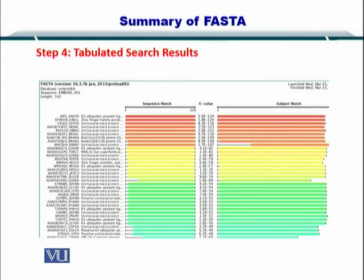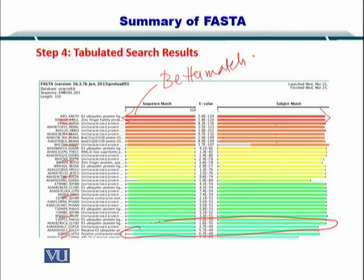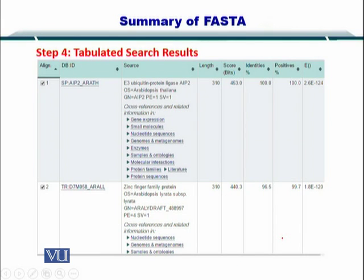Next, you perform the search. The output sample is shown here, and you can see many proteins have been reported as a result of the search. You can look at the details of each one. The red coloring indicates a better match, while the green items at the bottom represent an average match. The table of results is also available at the FASTA EBI portal, where you can look at the scores.